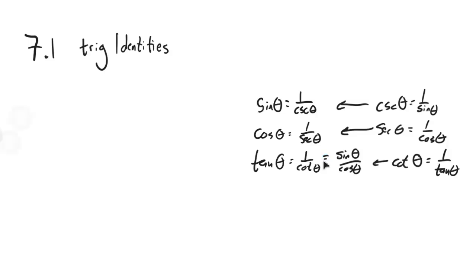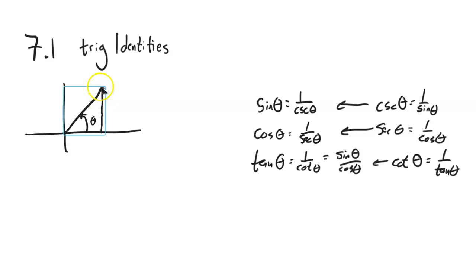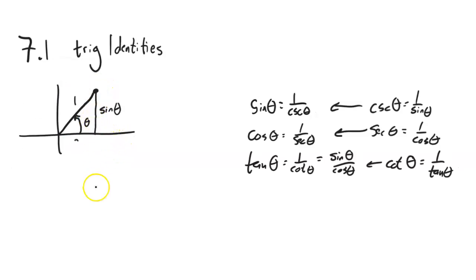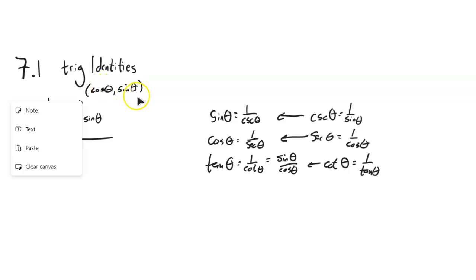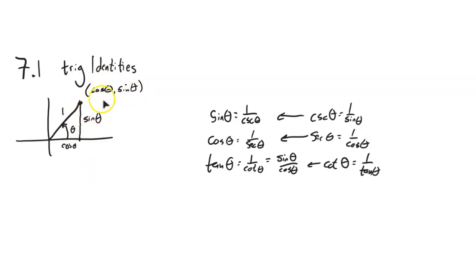The first identity we're going to talk about is called the Pythagorean identity. We have some angle theta, and we know that the position where theta terminates — as long as this is on the unit circle, as long as this distance is 1 — the height is sine and the width is cosine. So this point is (cosine theta, sine theta). That's the whole underpinning of the unit circle, where this radius is 1.